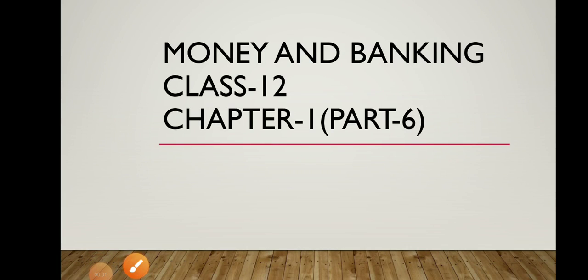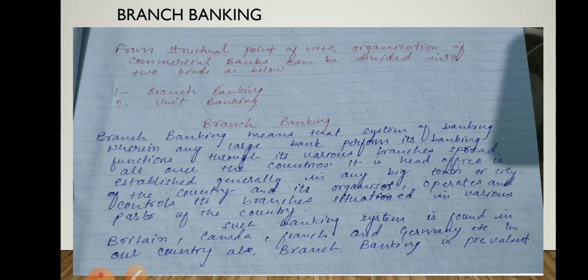Hello students, today I am going to teach about the subject Money and Banking, Class 12, Chapter 1st, Part 6. We will study about branch banking. From the structure point of view, the organization of commercial banks can be divided into two kinds: first is branch banking, second is unit banking.